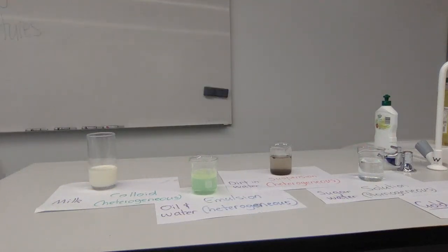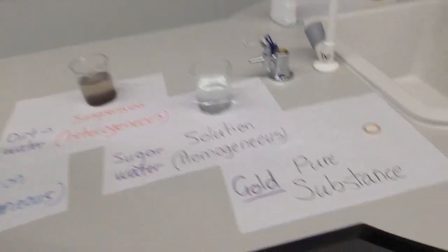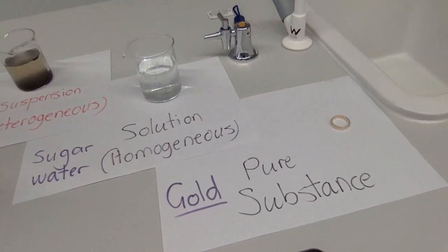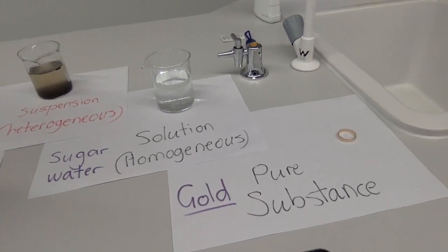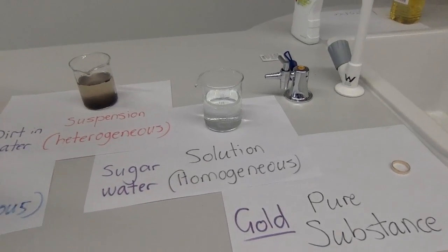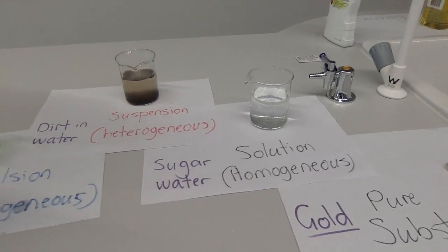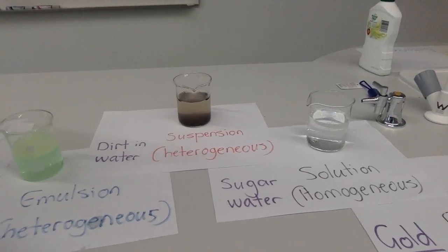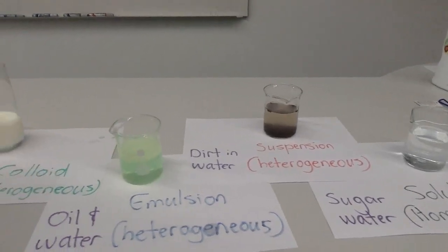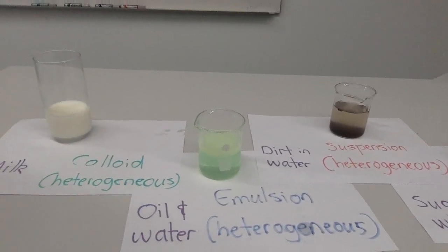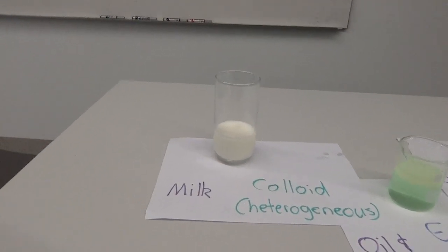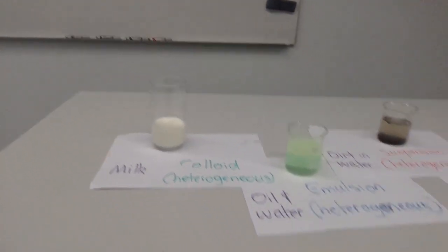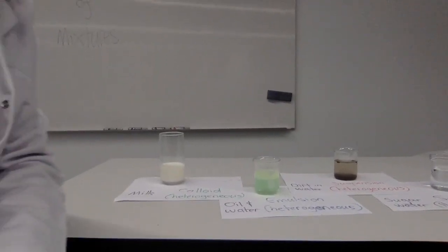So let's have one last look at this before we finish. I'll start off our purest substance, such as gold. Only one type of material in there, which is the gold atom. We come across to our solution of sugar and water. Then there's our suspension of dirt and water. There's our emulsion, mixing oil and water. And then milk, all the oils and fats and that in there, make it as a colloid. And that is a summary of our types of mixtures for today.